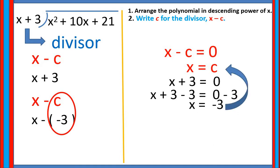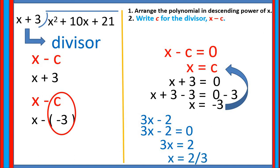Another example: if given 3x minus 2, equating that to 0 gives 3x equals 2. Dividing both sides by 3, x is equal to 2 over 3. So our value of z is 2 over 3.